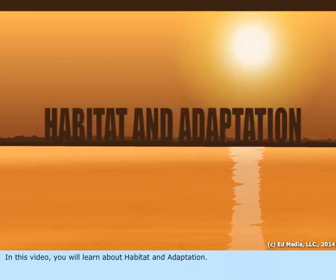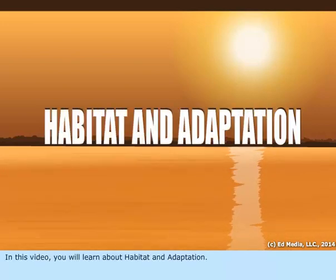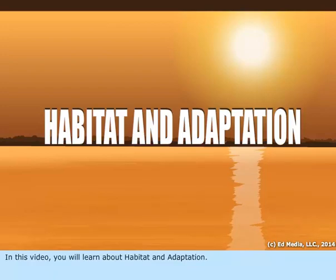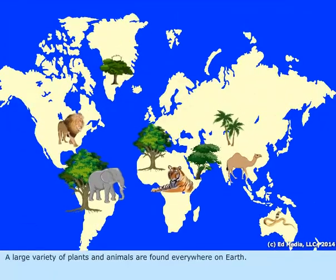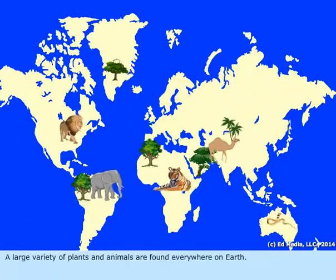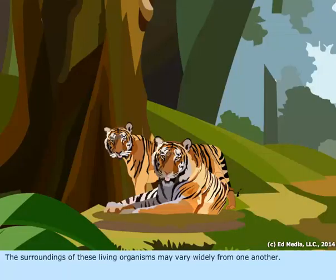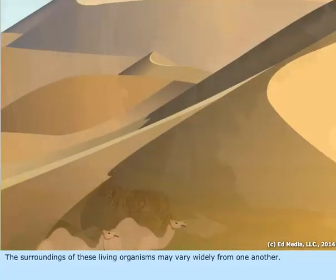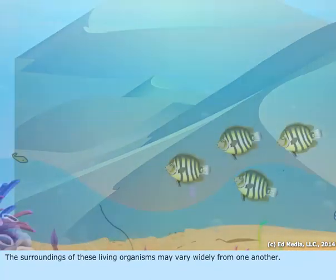In this video, you will learn about habitats and adaptation. A large variety of plants and animals are found everywhere on Earth, and the surroundings of these living organisms may vary widely from one another.